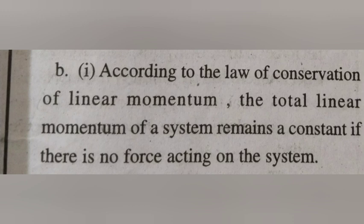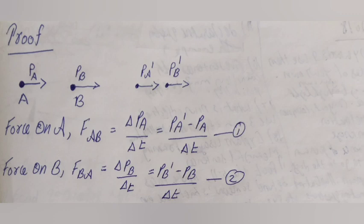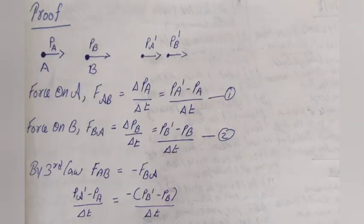Proof: Force on A, F_AB = ΔpA / Δt = (pA1 - pA) / Δt — equation 1. Force on B, F_BA = ΔpB / Δt = (pB1 - pB) / Δt — equation 2. By Newton's third law, F_AB = -F_BA.